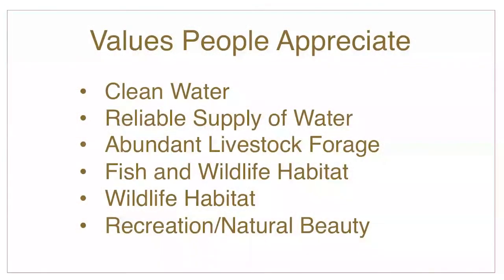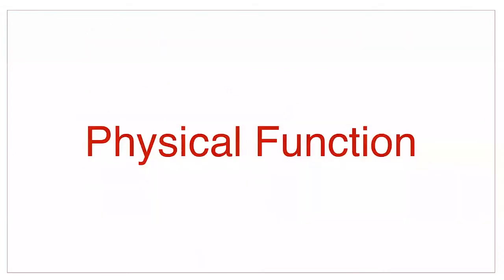These values include a clean, reliable water source, abundant livestock forage, fish and wildlife habitat, recreational opportunities, and natural beauty. Each of these are important values, and they each are made possible by a well-functioning riparian area.